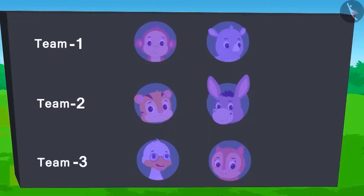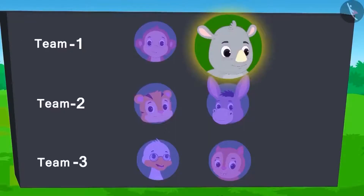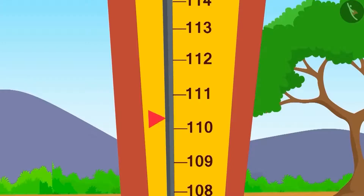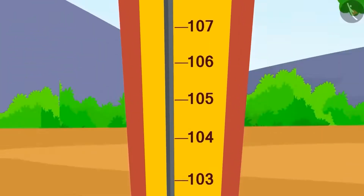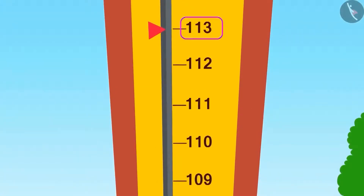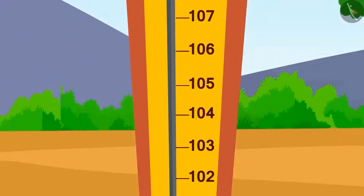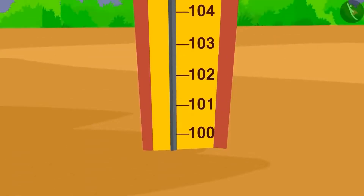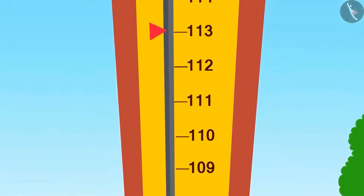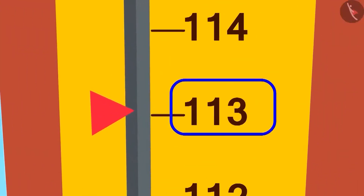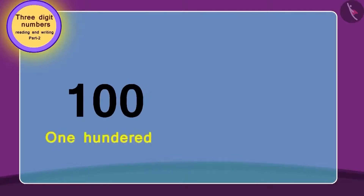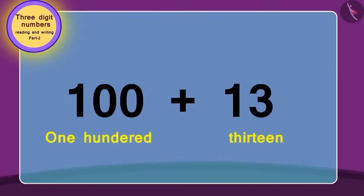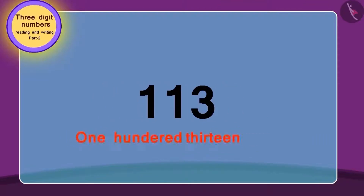First, from team 1, Gagu tried. He used his full strength and the flag reached the number 13 marks above 100. Can you read this number? Let's learn how to read it. This number is 13 points above 100, so to get this number we will add 13 to 100. In this way, the number becomes 113. Isn't it easy?